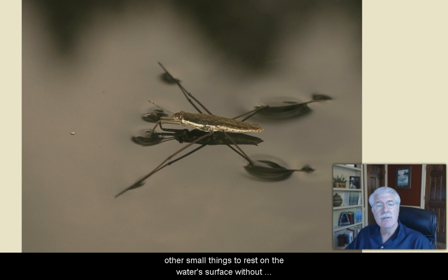It also enables bugs and other small things to rest on the water surface without sinking. Water's strong attraction to itself is called cohesion. This creates surface tension that allows insects, such as the water strider, to walk on it without breaking through.